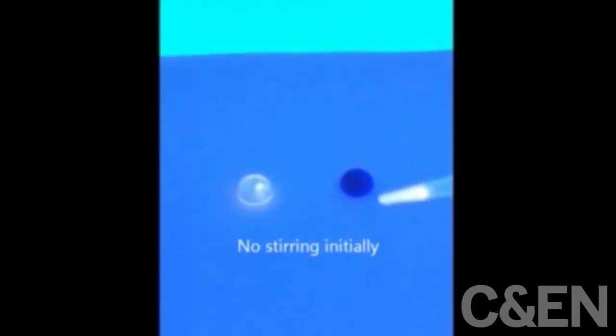Although the stir bars are too small to see with the naked eye, there are about 400 million of them in the droplet on the right.